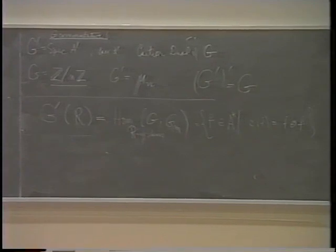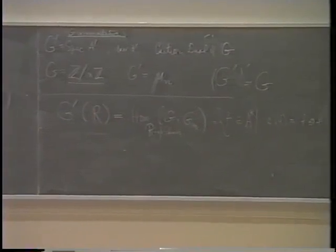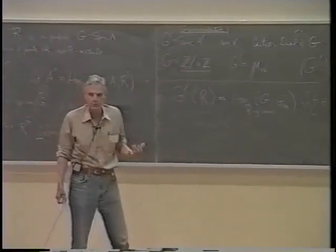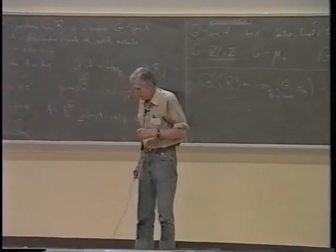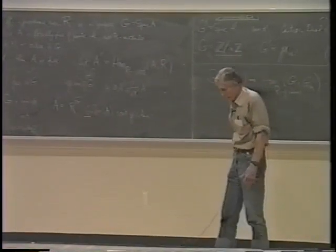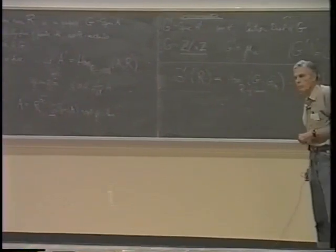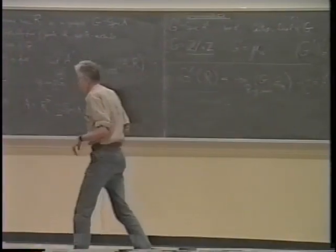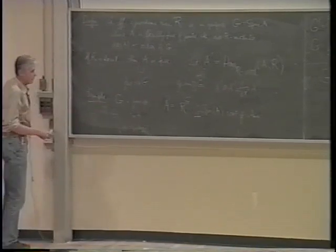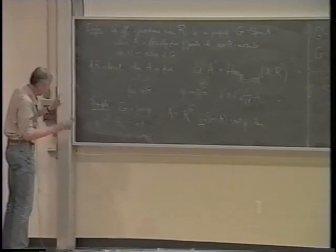Hilbert once said one should always begin with the simplest example. Ziegler, at the end of a paper, deplored the modern style of writing without giving any examples, or if you did give an example, it was of the set with no elements, or the group with one element, or the field with two elements. Well, I'm not going to do much better than that, but I want to give an example of a finite flat group scheme of order two.